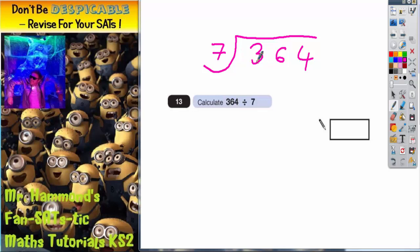7s into 3 won't go, but we haven't used the 3, so we carry the 3 along to the next column to make 36. 7s into 36, well 5 7s are 35, so there's 1 left over to make it up to 36, so that 1 remainder of 1 carries over to make 14.